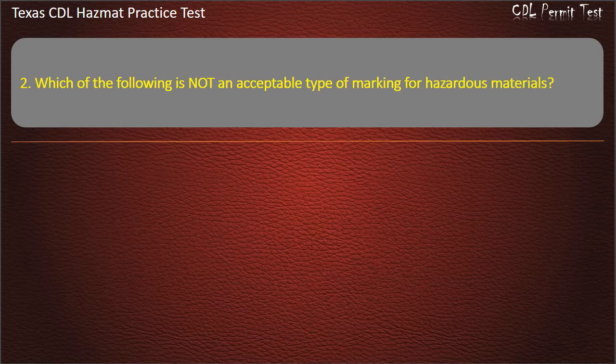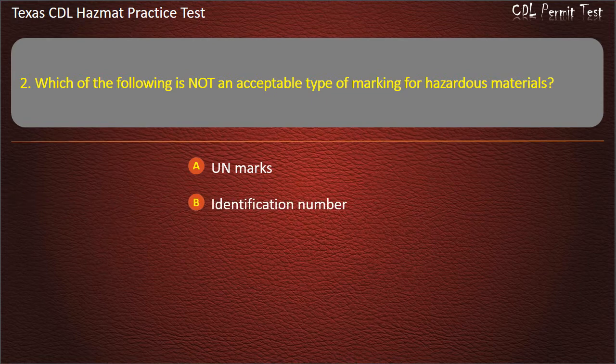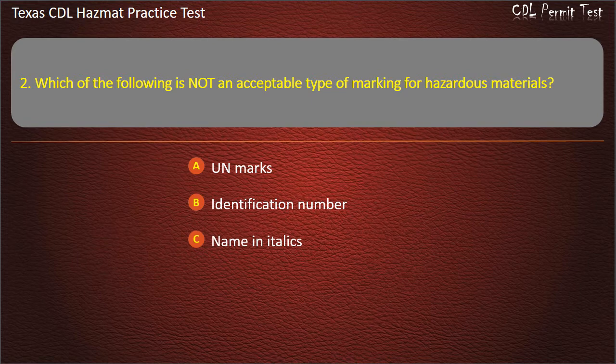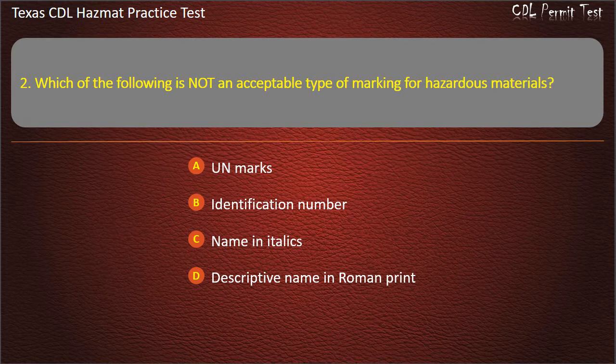Question 2: Which of the following is not an acceptable type of marking for hazardous materials? UN marks. Identification number. Name in italics. Descriptive name in Roman print. Answer: Name in italics.